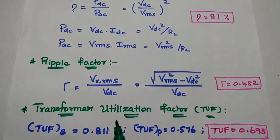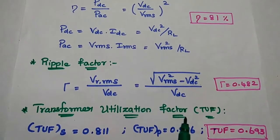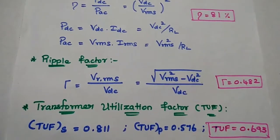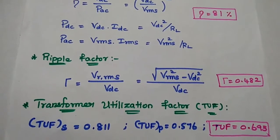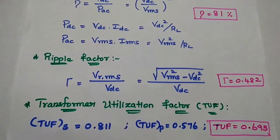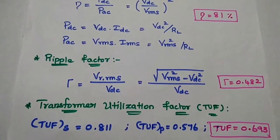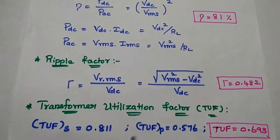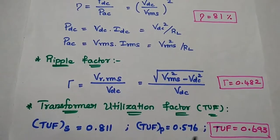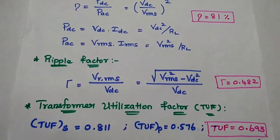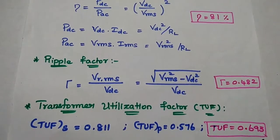The last one is transformer utilization factor, simply TUF. In this circuit we are using a center-tapped transformer. The TUF for the secondary winding is 0.811, the TUF for the primary winding is 0.576, and the average between these two gives the overall transformer utilization factor, which is always 0.693.